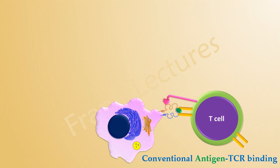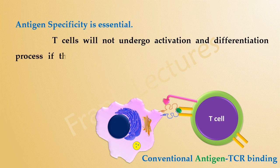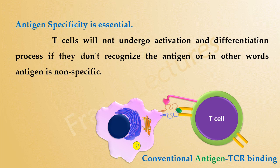Once recognition is done, the T-cell gets activated. It proliferates and differentiates into effector and memory T-cells, which are specific for the antigen. For activation of T-cells, the specificity of the antigen is a must. T-cells will not undergo activation and differentiation if they cannot recognize the antigen, or in other words if the antigen is nonspecific.